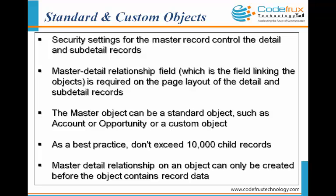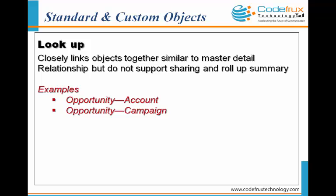A master detail relationship cannot exceed 10,000 child records. Also, if there is existing data in the two objects for which you want to establish the relationship, you need to remove those records first and then establish the relationship.